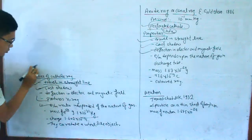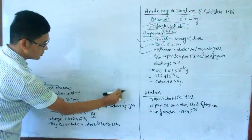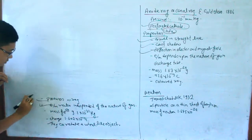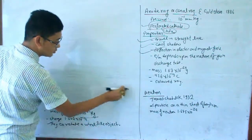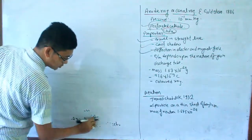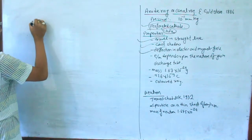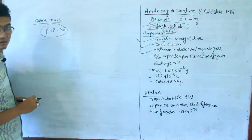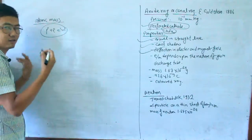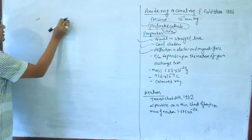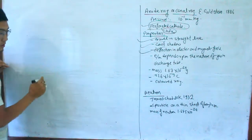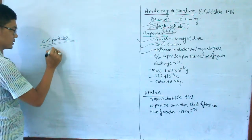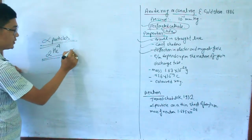The neutron was discovered in 1932 by Chadwick. The atom is neutral, meaning the number of electrons and protons are always equal. However, the atomic mass could not be explained by protons and electrons alone. In 1932, alpha particles — ²He⁴, with 4 atomic mass units — were used in the experiment.